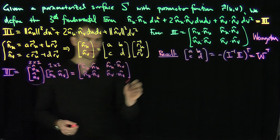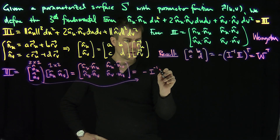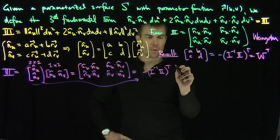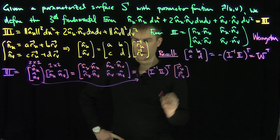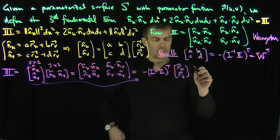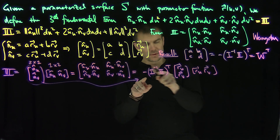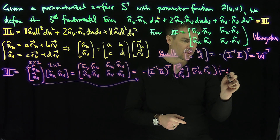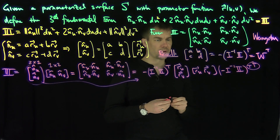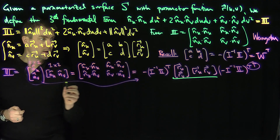Now, this first matrix factor is exactly negative I inverse II transposed, hit with [R_U, R_V]. When we transpose the row factor, we get [R_U, R_V] transposed, then the transpose of negative I inverse II. This inner multiplication — [R_U, R_V] transposed times [R_U, R_V] — is exactly just the first fundamental form I.